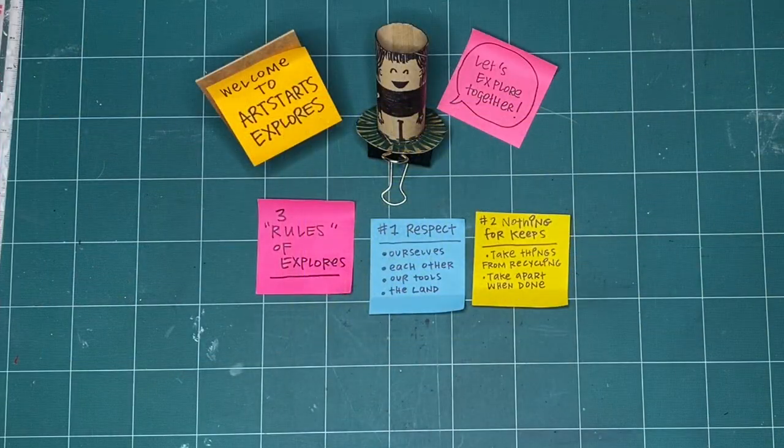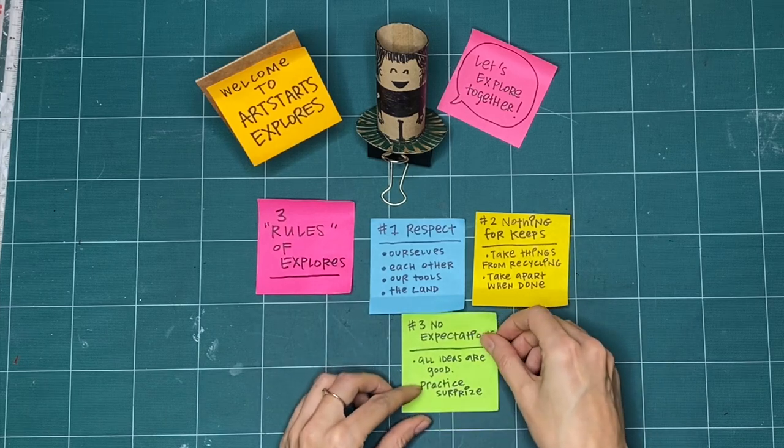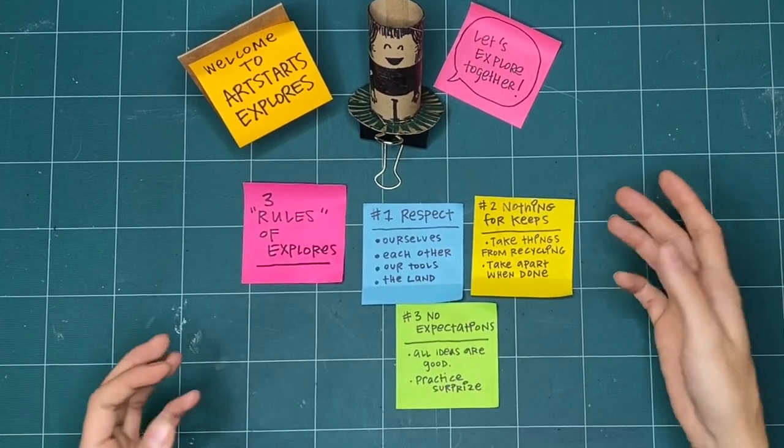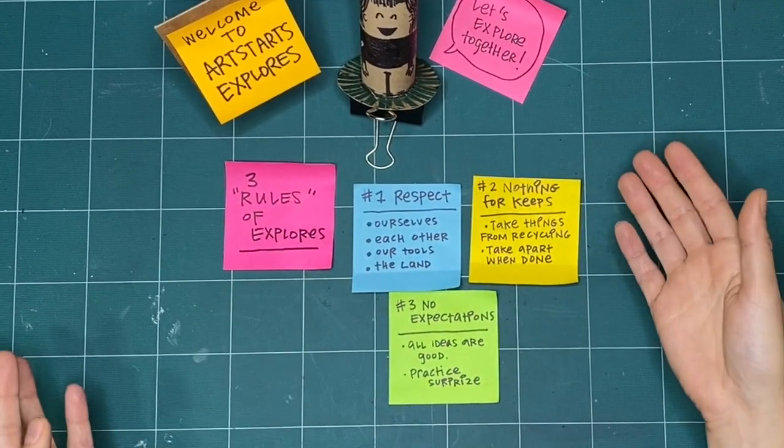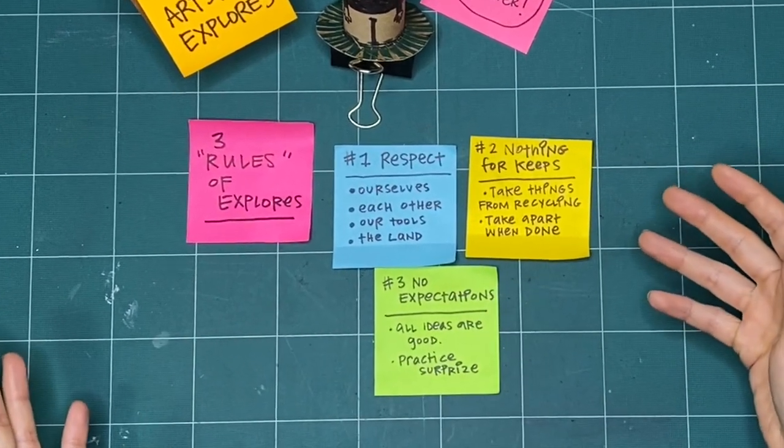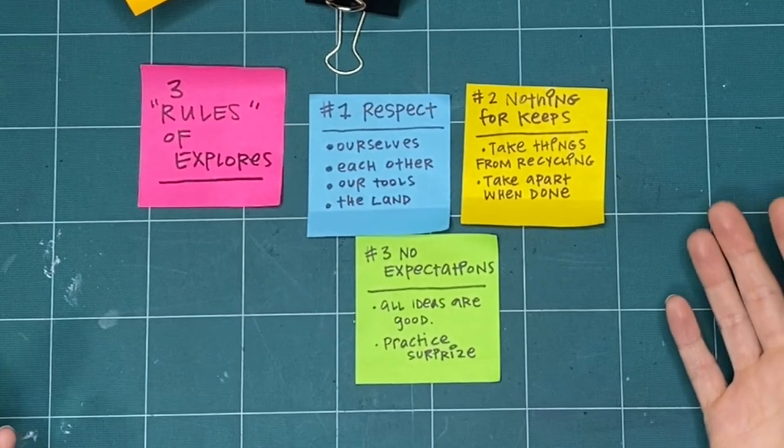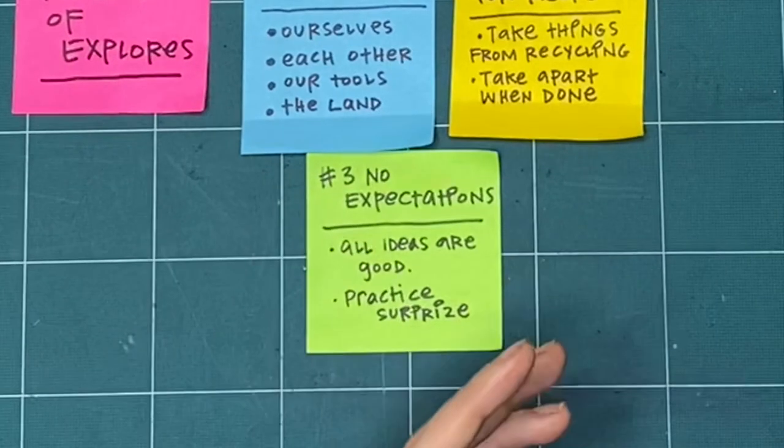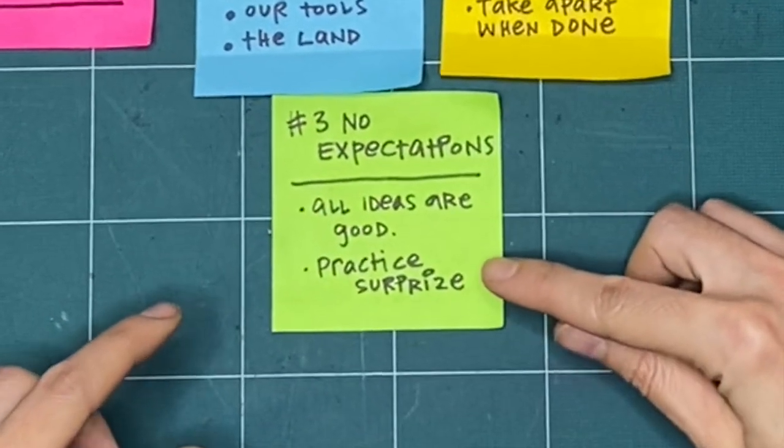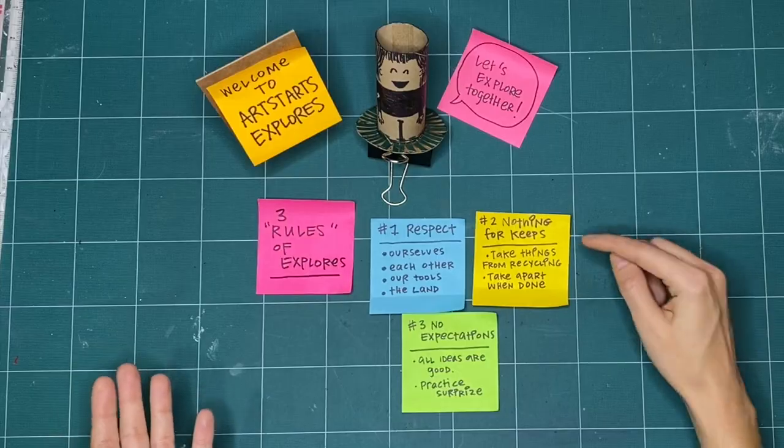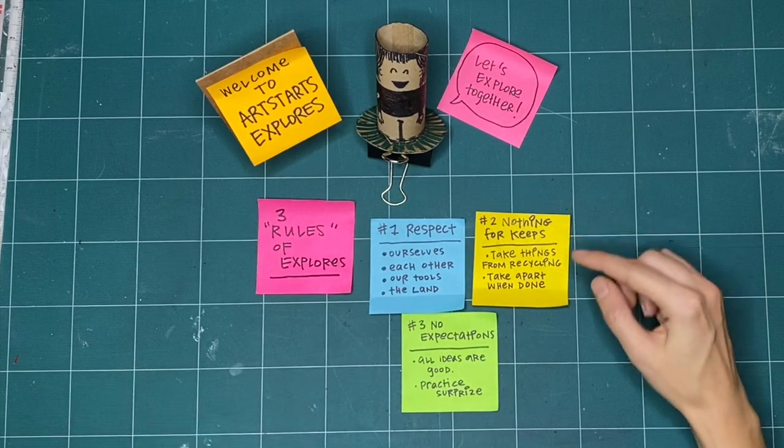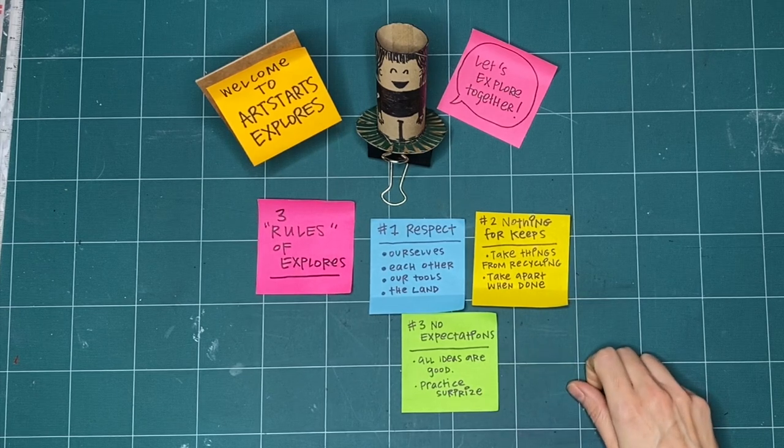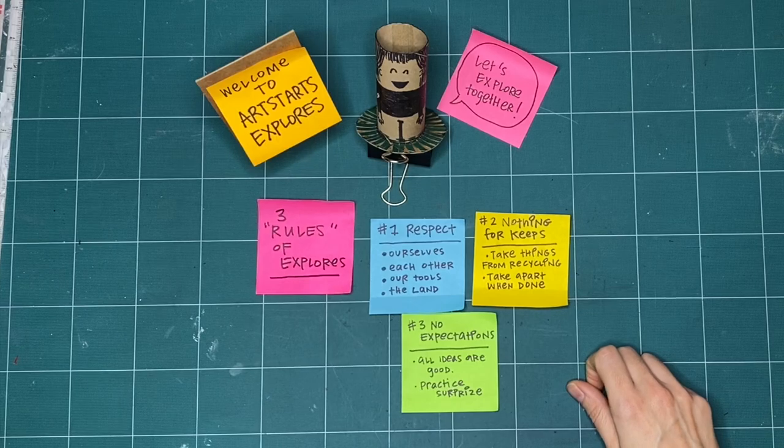Our last rule is no expectations. If we're not expecting something to turn out good, or even to turn out bad, we're open to it going in a whole bunch of different ways. And that means that all respectful and creative ideas are good, regardless of what happens after we try something. If you already know how something is going to turn out, if you've done it before, we can be open to trying something completely new and practice surprise. And if it doesn't turn out, that's okay. It's not for keeps. These are the three rules that we like to keep in mind when we explore together every week. Okay, let's get making together.